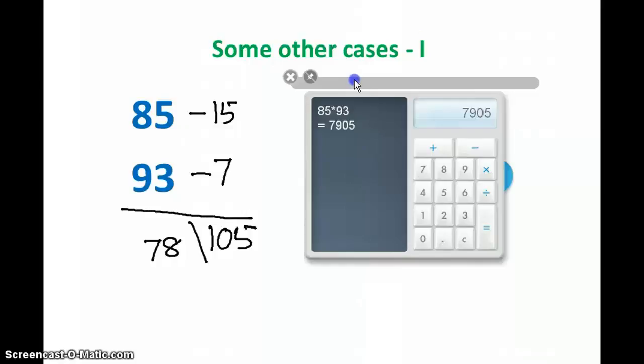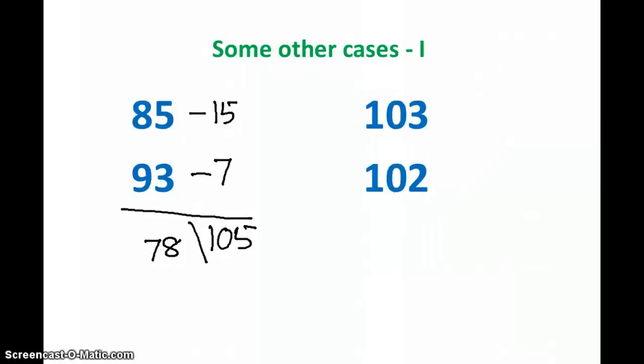So what went wrong here? What should we modify? If you remember, I told you that our base is 100. That means on the right-hand side, whenever we multiply these two numbers, we should get a number which is of two digits. It cannot be less than two digits or more than two digits. But we have a case where we have a number more than two digits. Then what should we do?